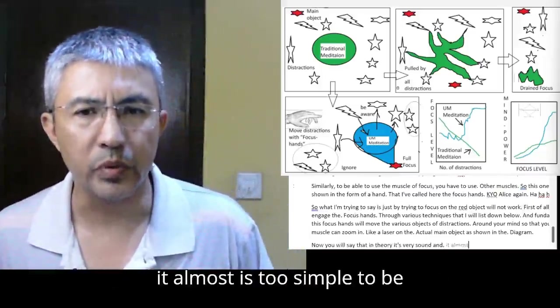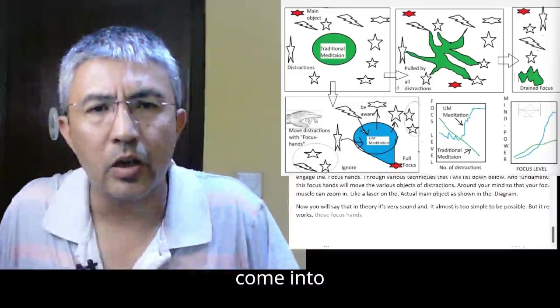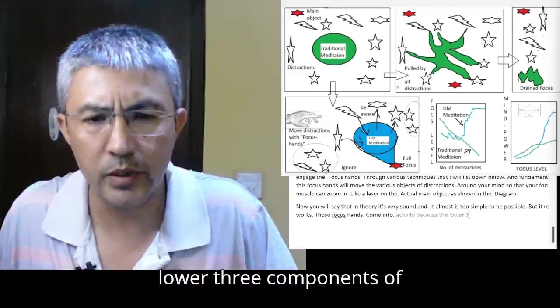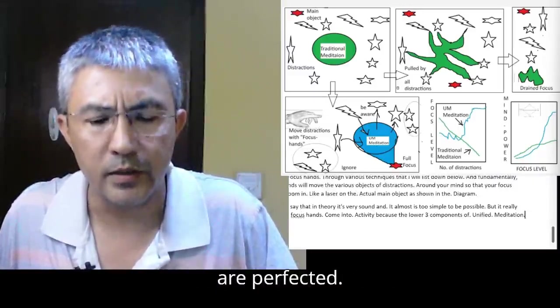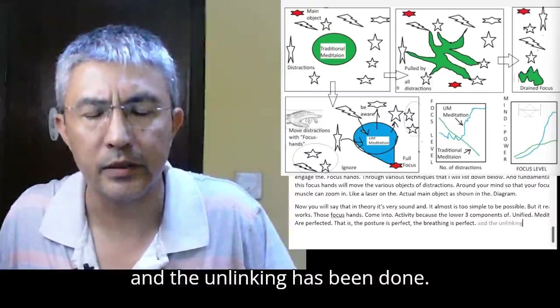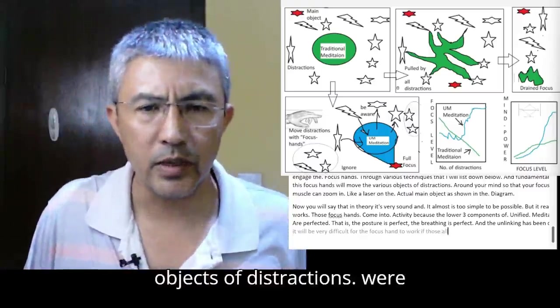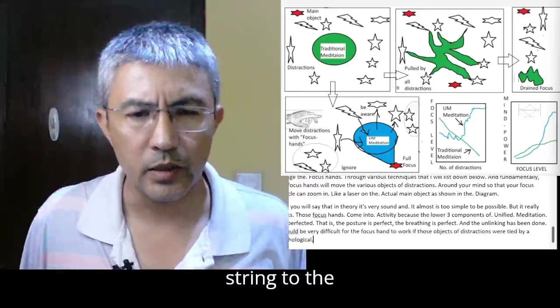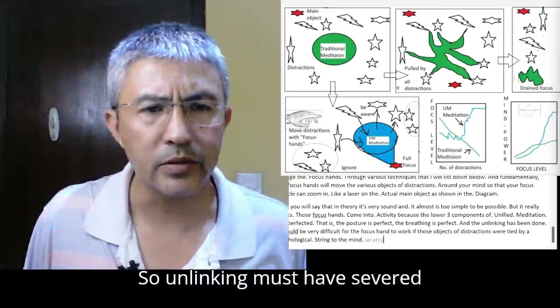First of all, you have to engage the focus hands through various techniques that I will list down below. Fundamentally, this focus hands will move the various objects of distractions around your mind so that your focus muscle can zoom in like a laser on the actual main object as shown in the diagram. It will be very difficult for the focus hand to work if those objects of distractions were tied by a psychological string to the mind. So unlinking must have severed those links.